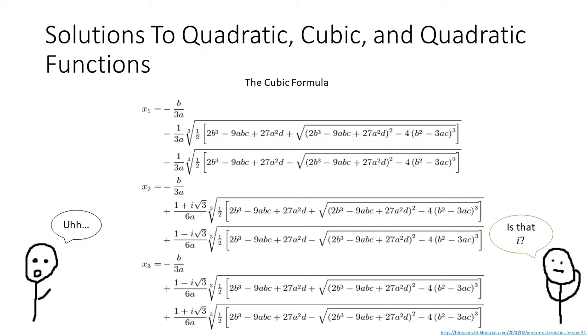For a cubic, we can see that the general solution becomes more complex, and there is a possibility of three solutions. One of the variables is always real, while the other two can be complex.